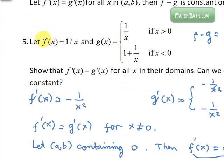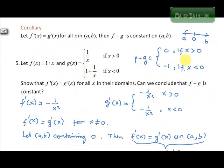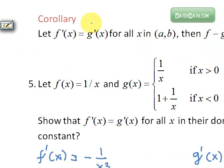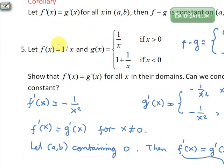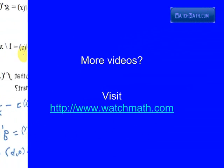The objective of this problem is to show that it does not contradict the corollary. Even though f minus g is not constant, it is not because the Mean Value Theorem failed, but because the condition of the corollary is not satisfied.